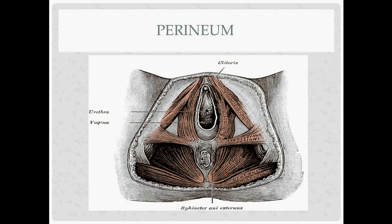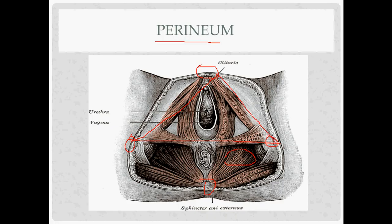The perineum is especially important because of lacerations during childbirth. The pelvic diaphragm forms the floor of the pelvis, made up of the levator ani and the coccygeus muscles. Inferior to the pelvic diaphragm is the perineum. Its boundaries are defined by the ischial tuberosities, pubic symphysis, and coccyx. Drawing a line between the ischial tuberosities divides the perineum into an anterior urogenital triangle and a posterior anogenital triangle.